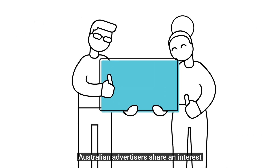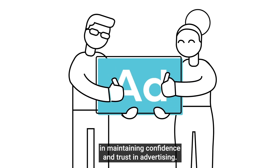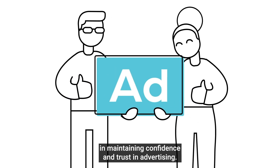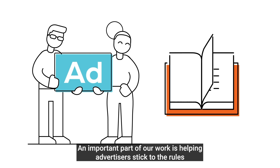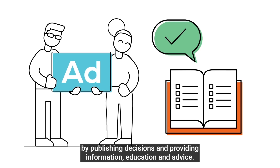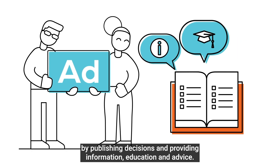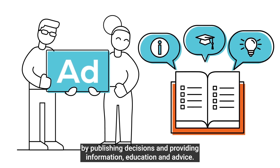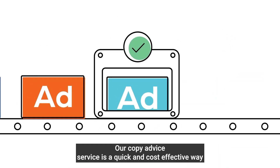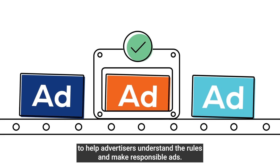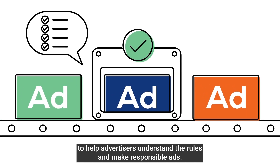Australian advertisers share an interest in maintaining confidence and trust in advertising. An important part of our work is helping advertisers stick to the rules by publishing decisions and providing information, education and advice. Our copy advice service is a quick and cost-effective way to help advertisers understand the rules and make responsible ads.